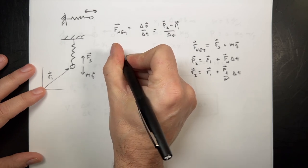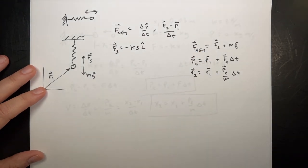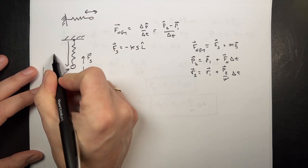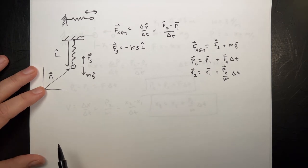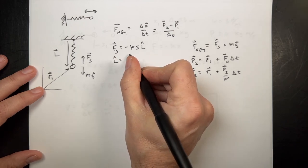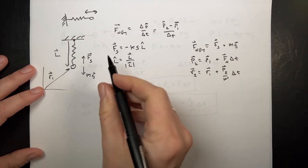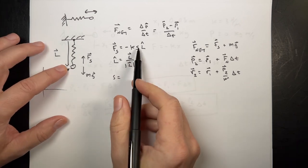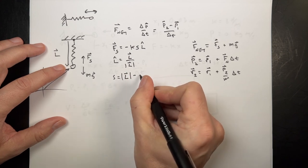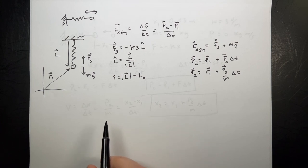The spring force model is: F_spring = -K·S·L̂, where L̂ is a unit vector from the beginning to the end of the spring, equal to vector L divided by the magnitude of L. S is the amount of stretch: the length of L minus L₀, the unstretched length. So we have enough to build this model. I want to use the same values but make it vertical in 3D.